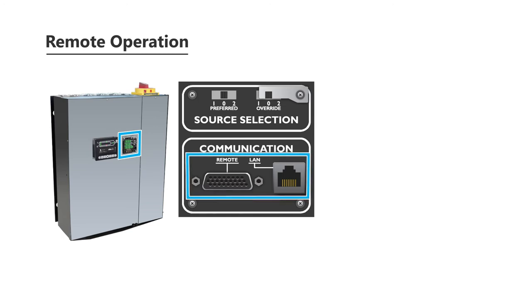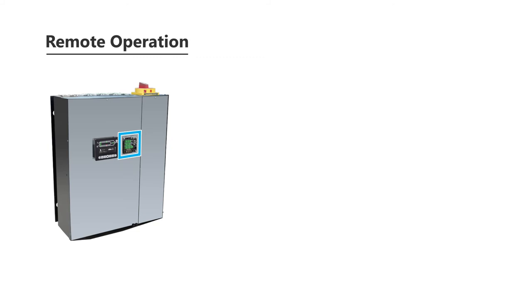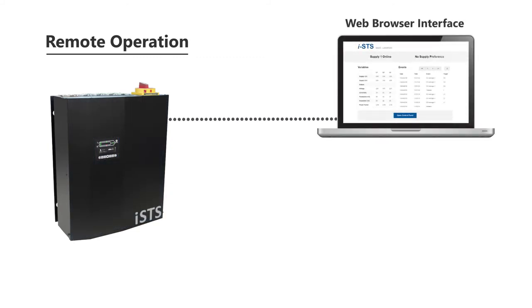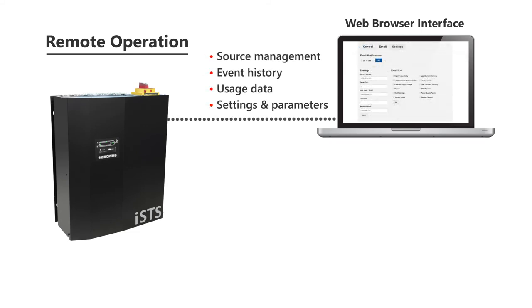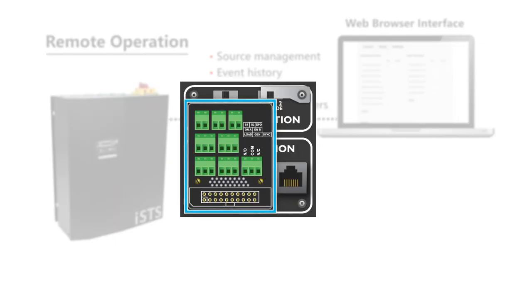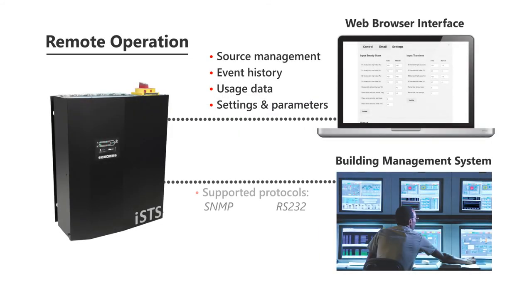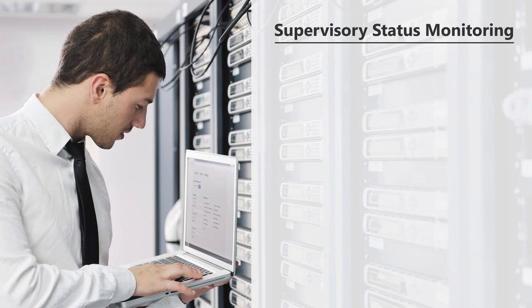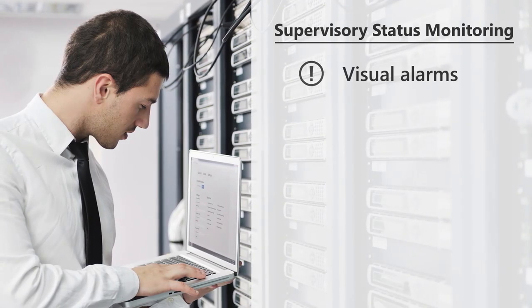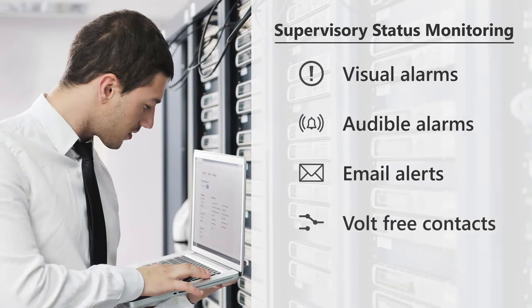Terminals for remote connectivity are located behind the front panel. Connect to the STS via Ethernet and use the web browser interface to remotely access source management, event history, usage data, settings, and parameters. Easy-to-connect terminals enable integration into building management systems, compatible with common industry communication protocols without the need for proprietary software. The user is kept informed of the STS state with visual and audible alarms, email alerts, volt-free contacts, and LAN.